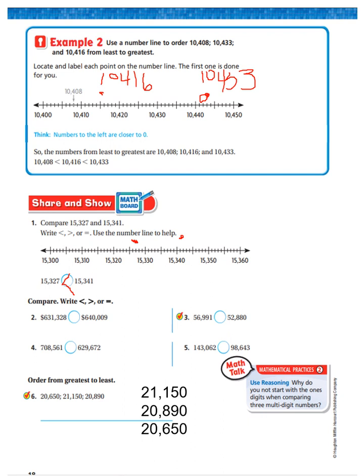Now, it's asking us to write more than, less than, or equal to. $631,328 is more than, less than, or equal to $640,009. What's the answer, boys and girls? $631,000 is less than $640,000. So we're going to put the less than sign there.